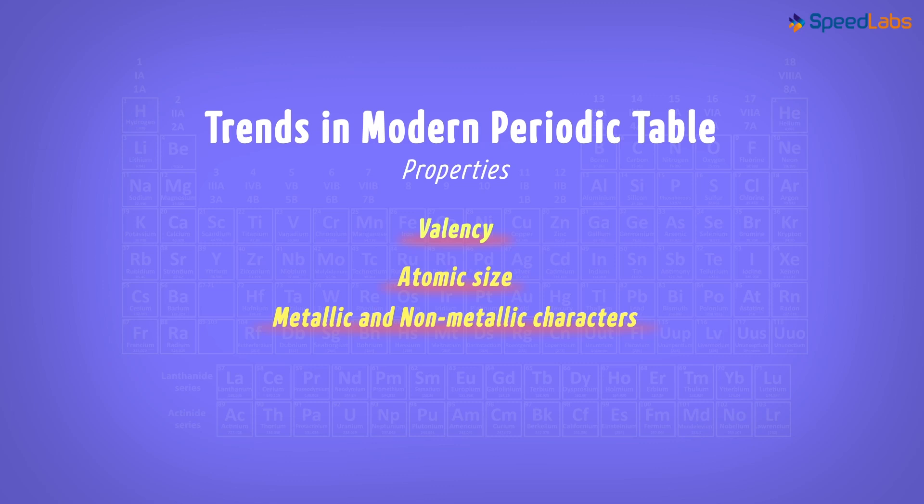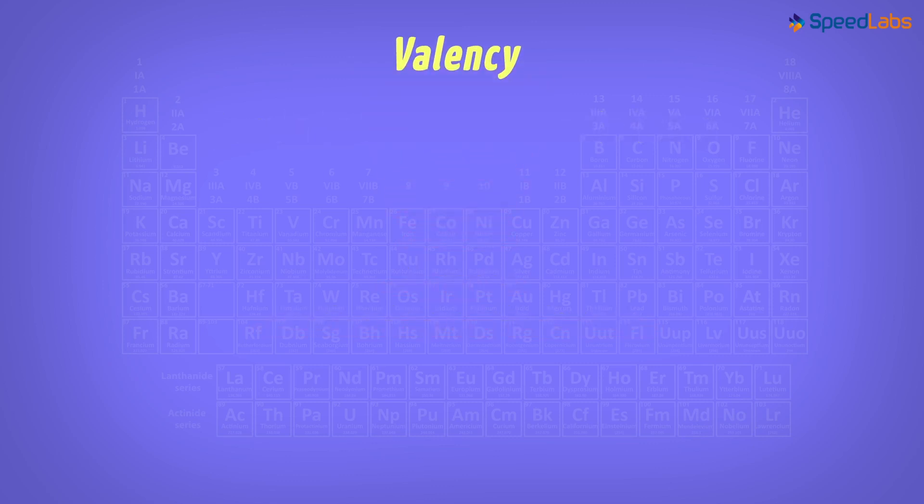The first trend we select is valency. We know that it is defined as the capacity of the atom to give or take electrons during bond formation.